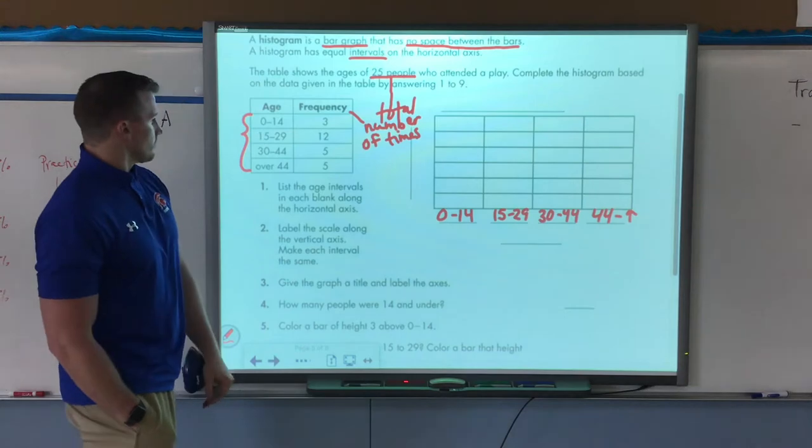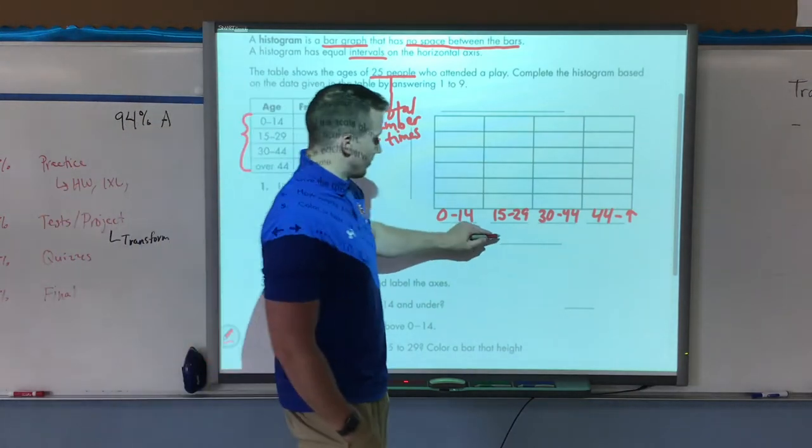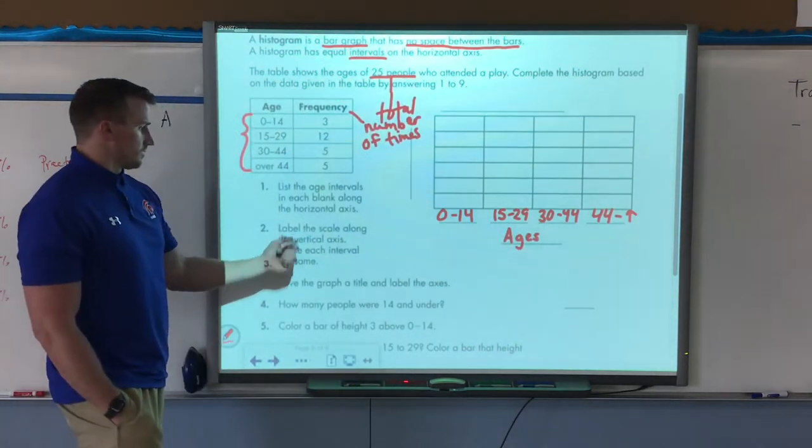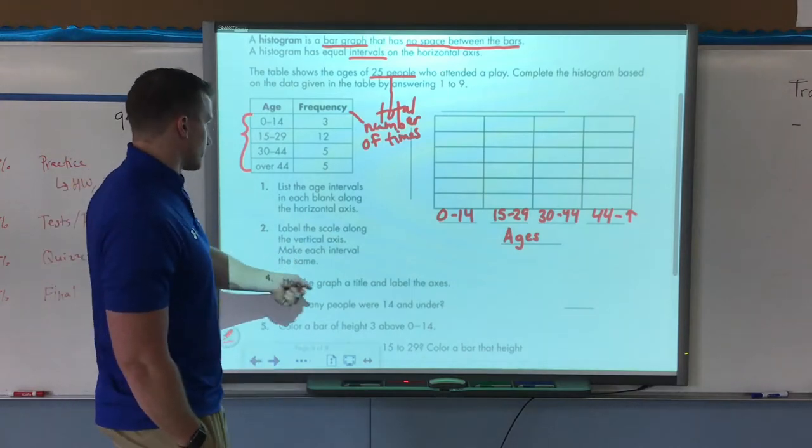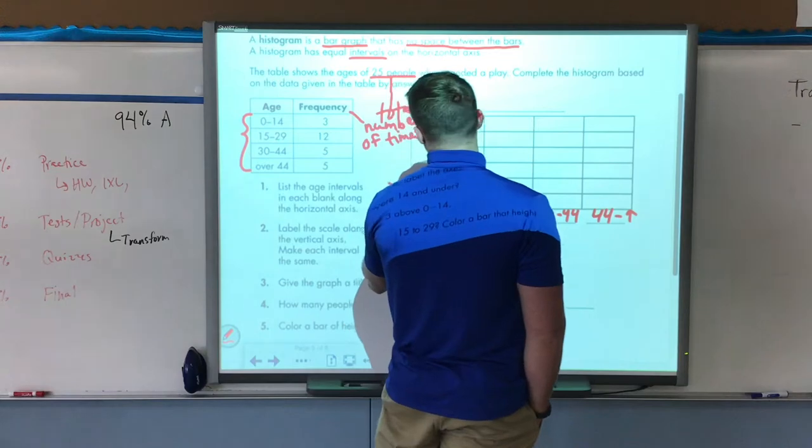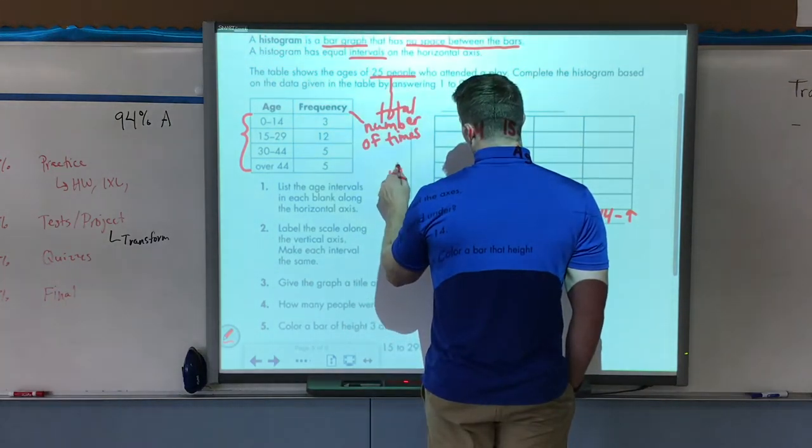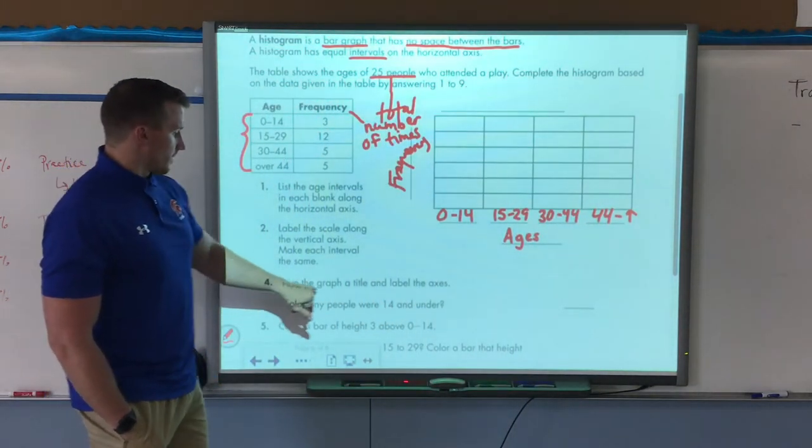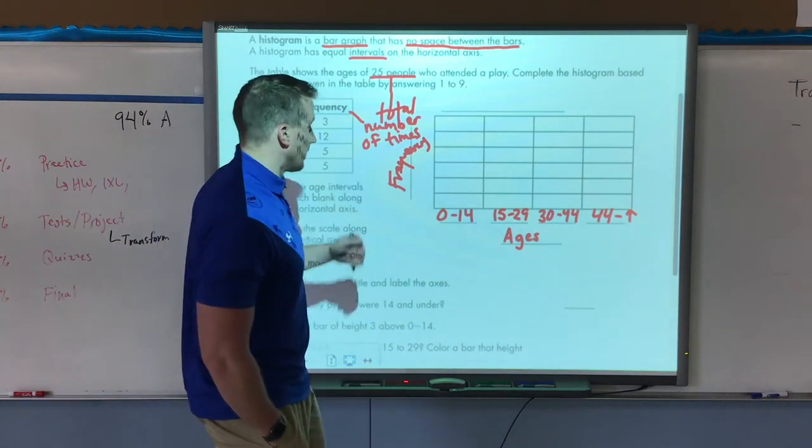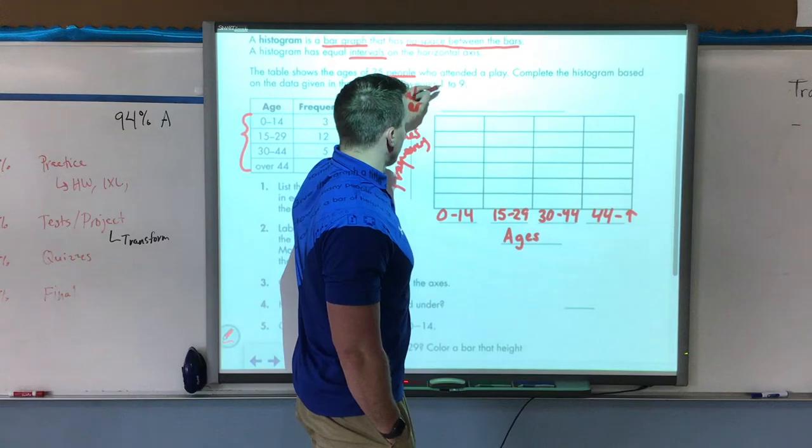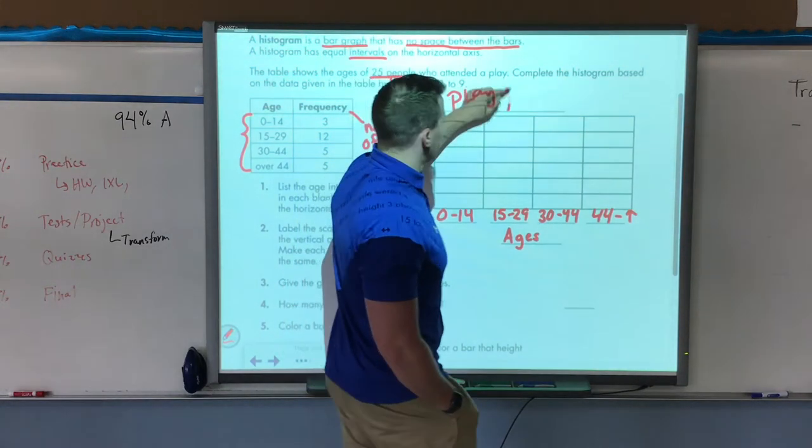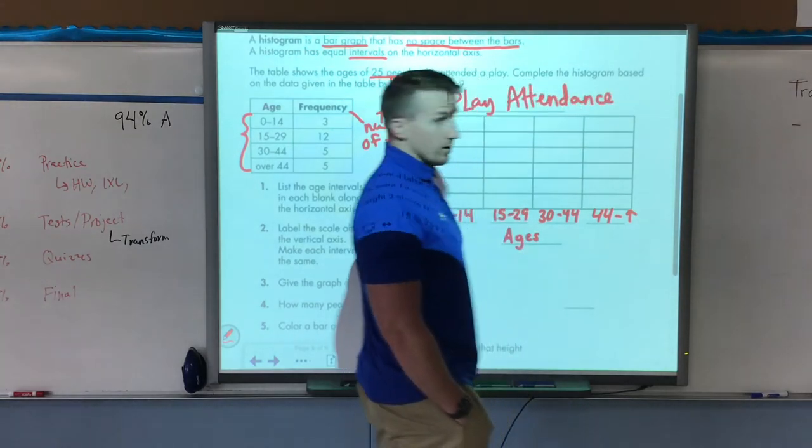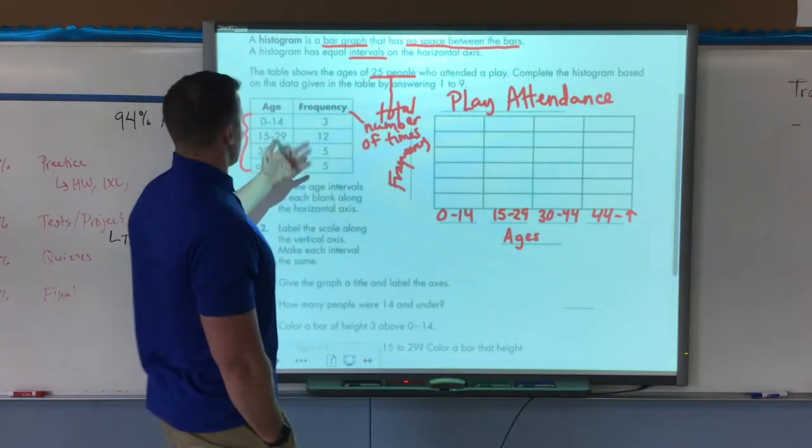Down here I'm going to label this, this would be ages. Label the scale along the vertical axis. This is my frequency. Now I need to give the graphic a title and label the axis as well. Here at the top I'm going to write play attendance. I don't know what kind of play it is, I just know how many people attended.